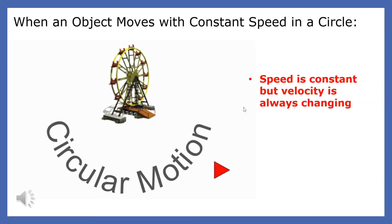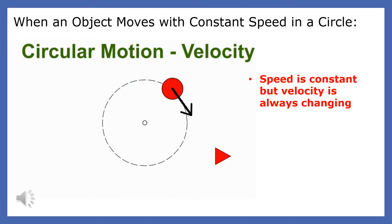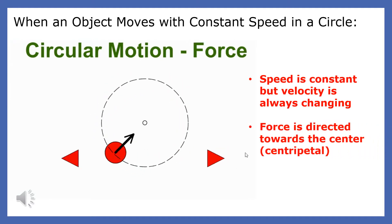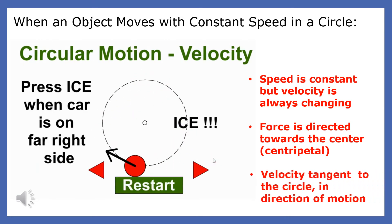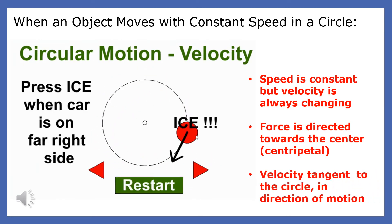When an object moves with constant speed in a circle, the speed is constant but the velocity is changing because the direction is always changing. The force on the object is centripetal, or towards the center, and the velocity is tangential, or tangent to the circle in the direction of the motion.